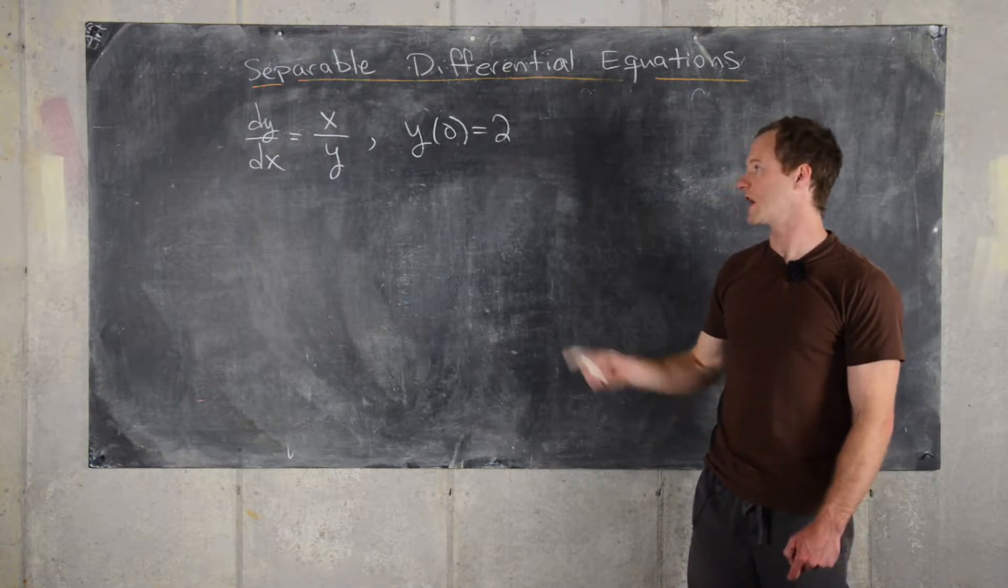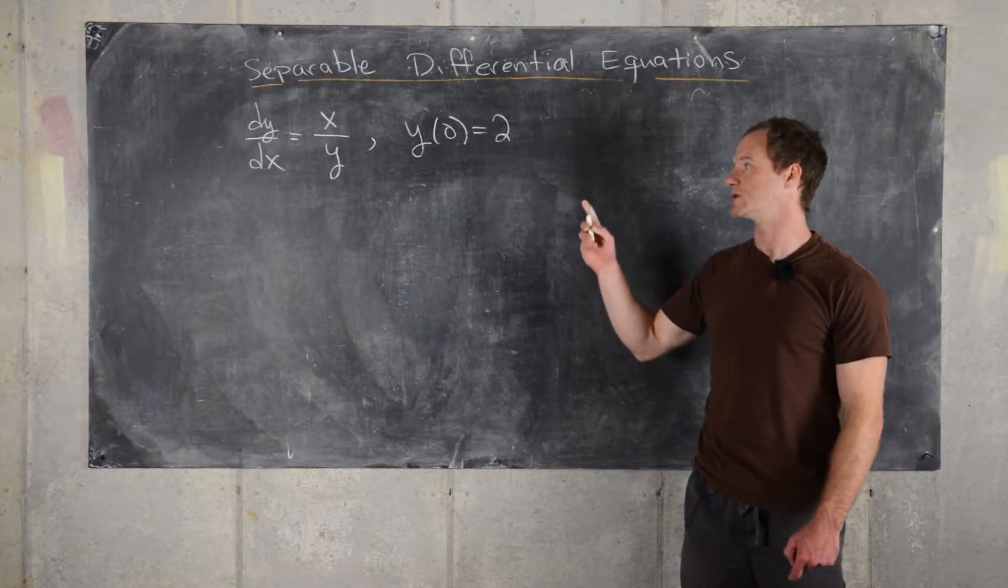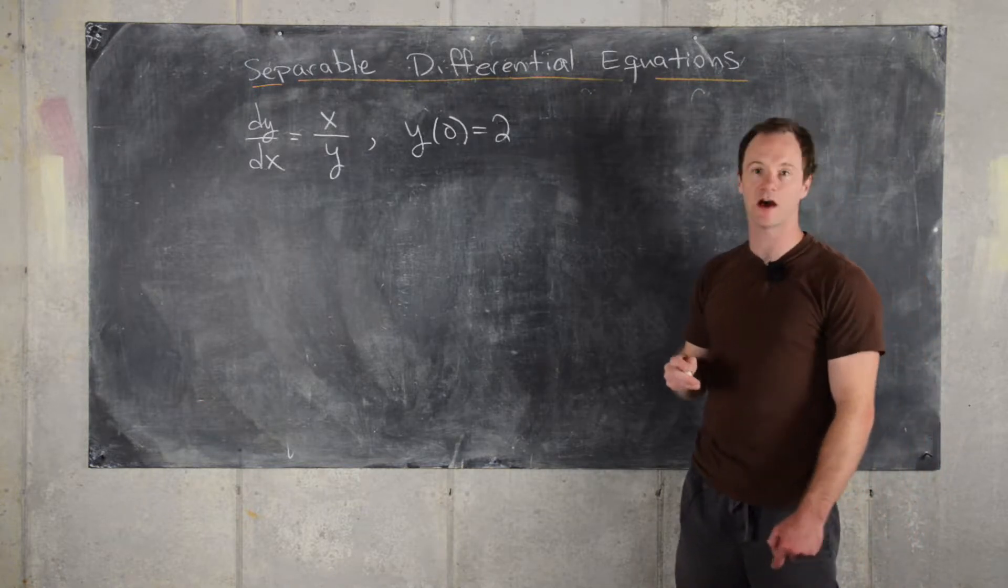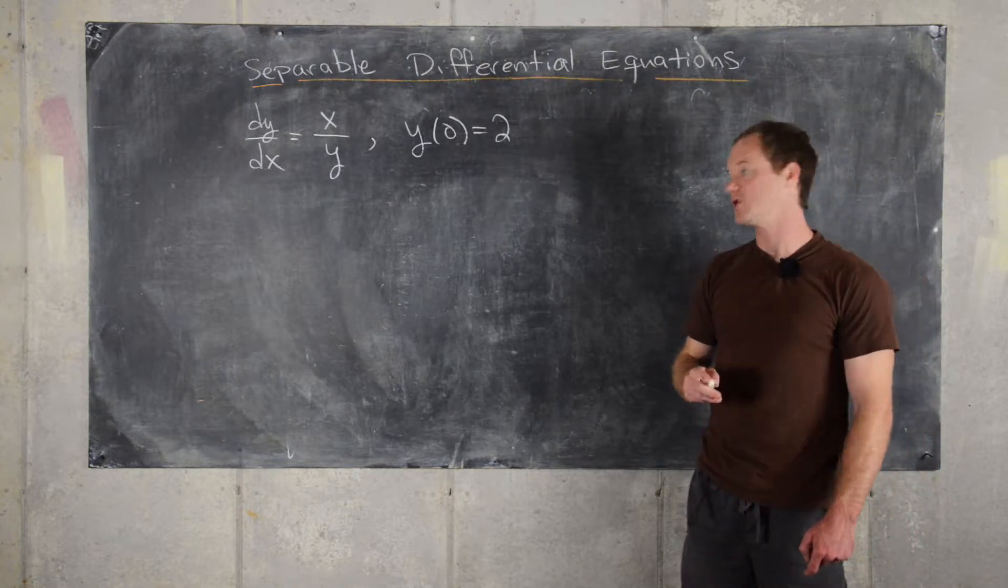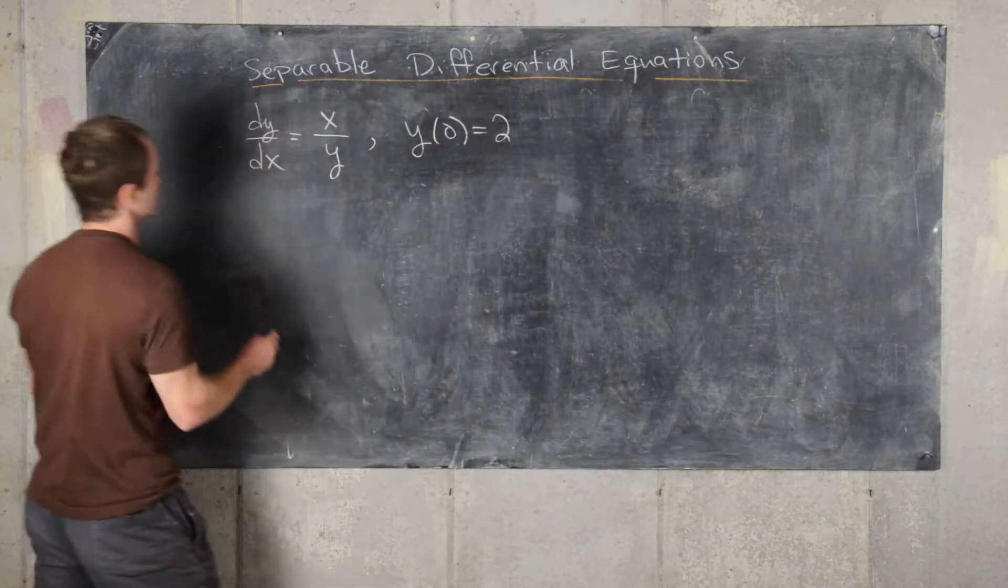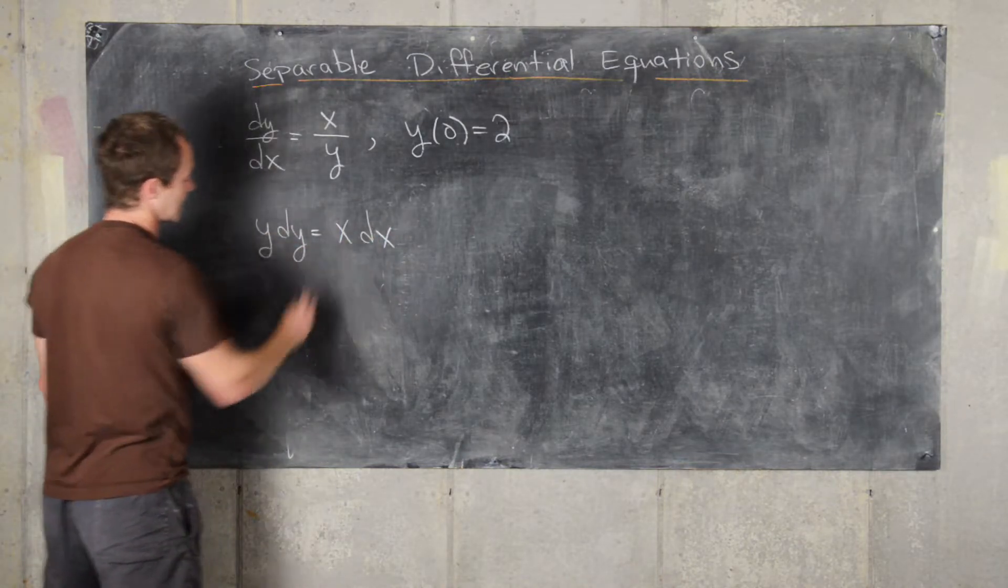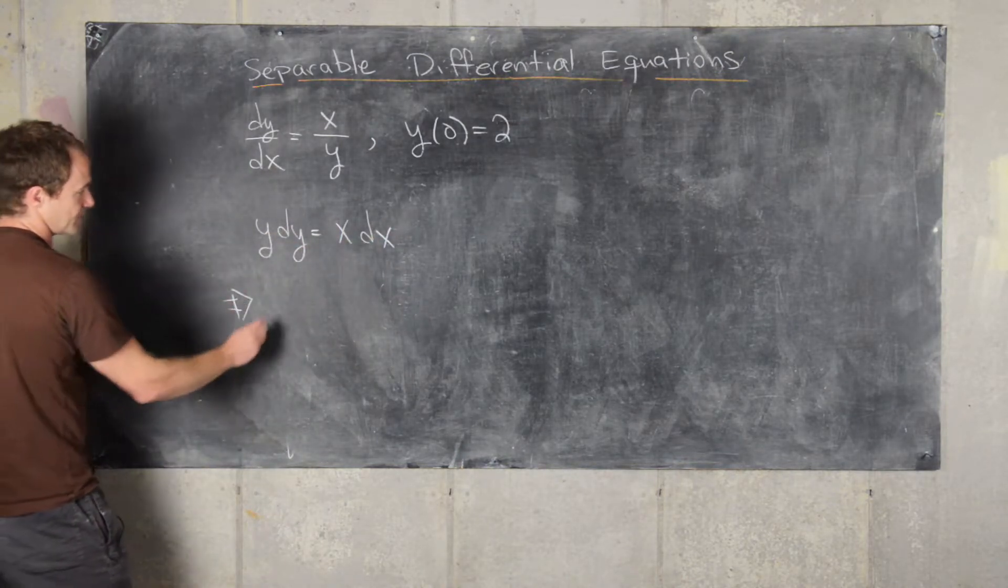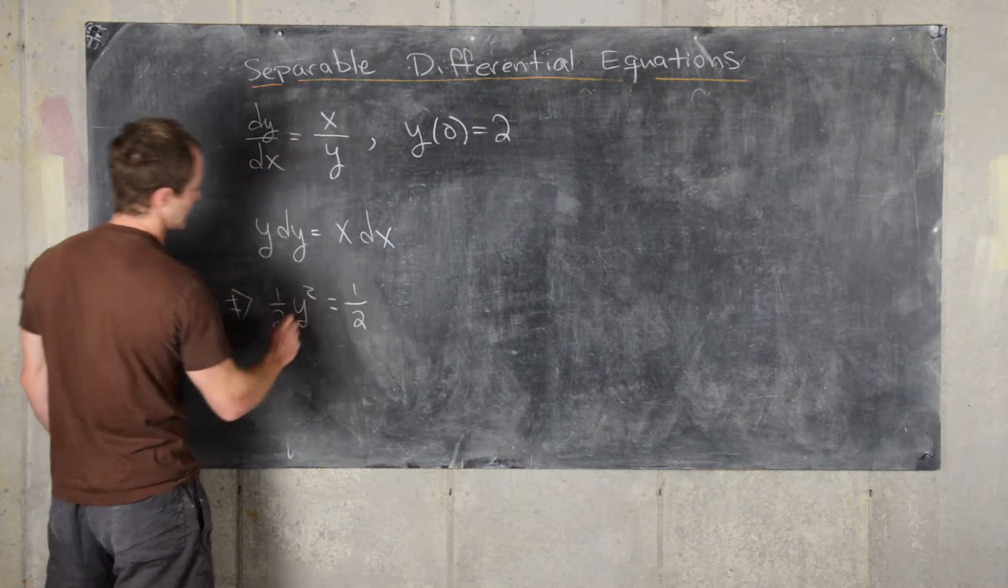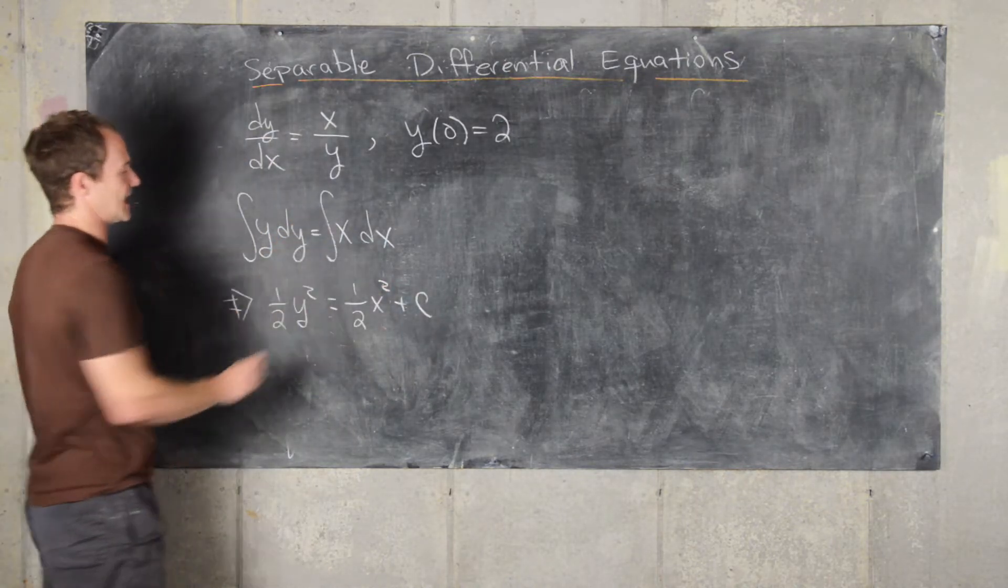Let's look at this initial value problem. We have dy/dx = x/y, and our initial condition is at x = 0, we have y = 2. Following our fast strategy that we just outlined, we can see that we have y dy = x dx, which gives us (1/2)y² = (1/2)x² + C after we've taken this antiderivative.